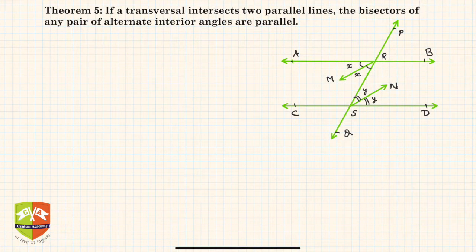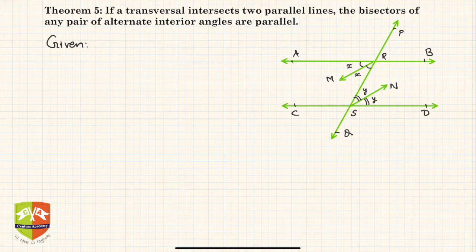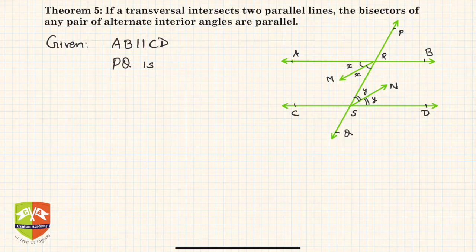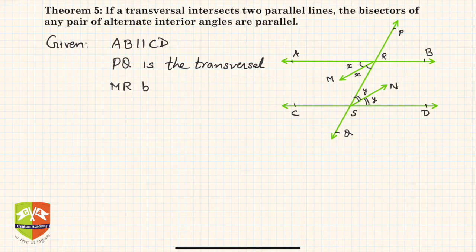Let's continue with another theorem. The theorem says: if a transversal intersects two parallel lines — so given that AB is parallel to CD, two lines which are parallel to each other, and PQ is the transversal. A transversal is a line which cuts two lines on a plane.